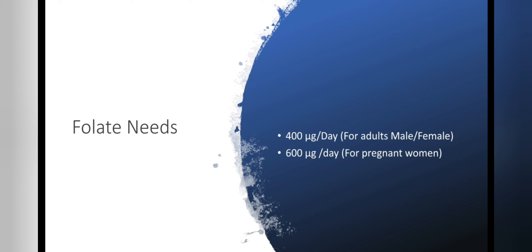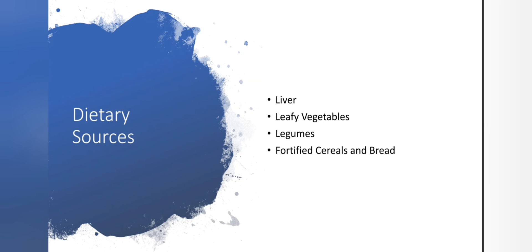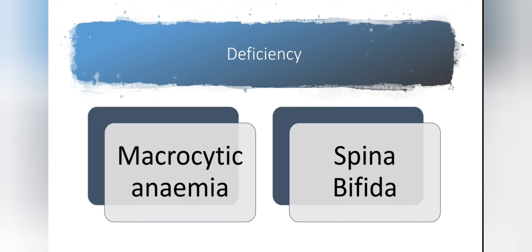The daily requirement for vitamin B9 for both adult males and females is 400 micrograms per day, and for pregnant women it is raised to 600 micrograms per day. Good sources include liver, leafy vegetables, legumes, and fortified cereals. However, vitamin B9 is sensitive to heat, so food processing may reduce its levels, meaning food may need to be fortified or individuals may rely on supplements to meet daily requirements.